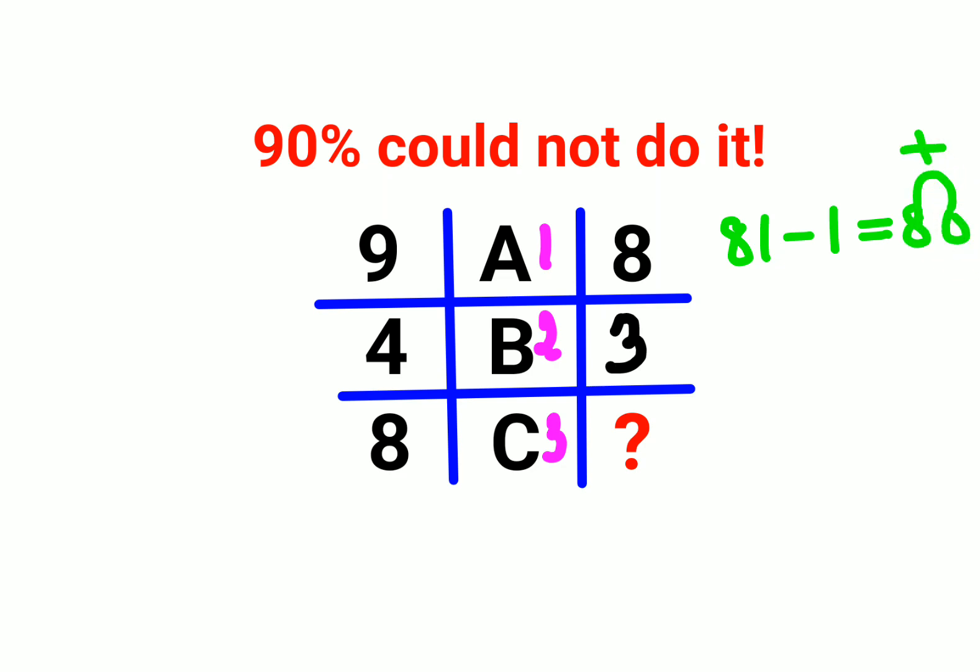Similarly, 4 square is 16. 16 minus 2 square which is 4 gets you 12. So 1 plus 2 gets you 3.